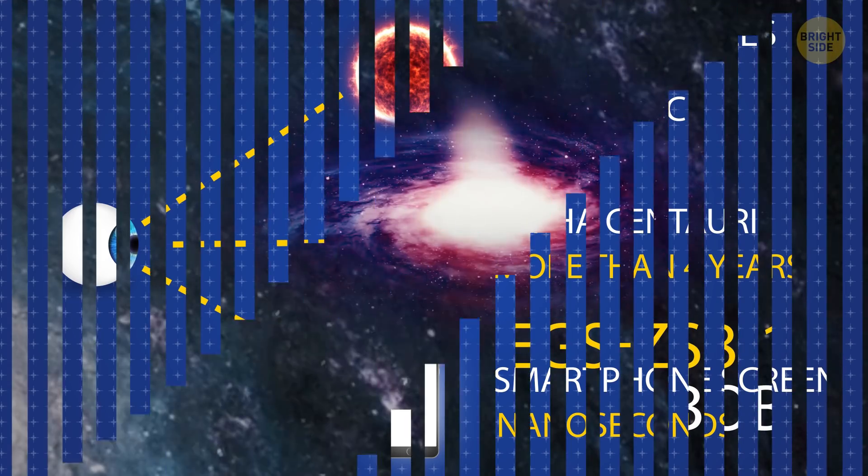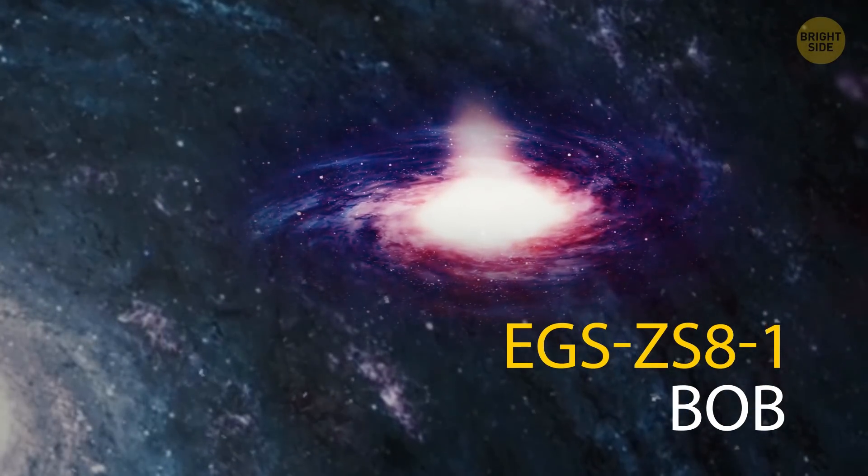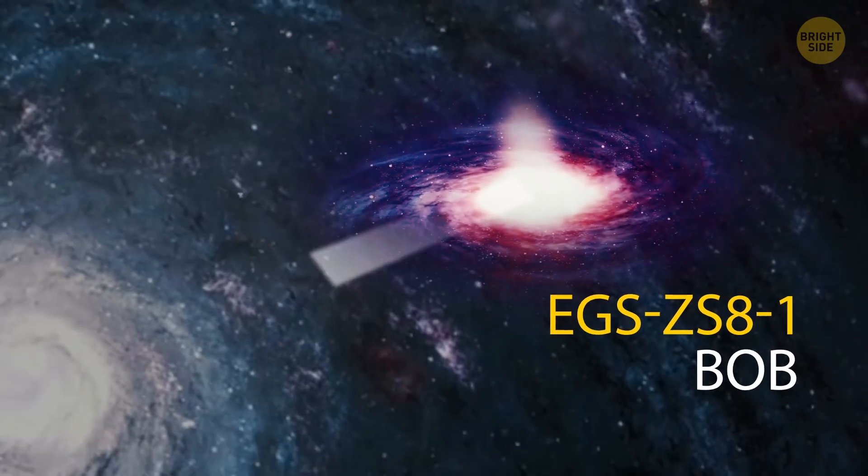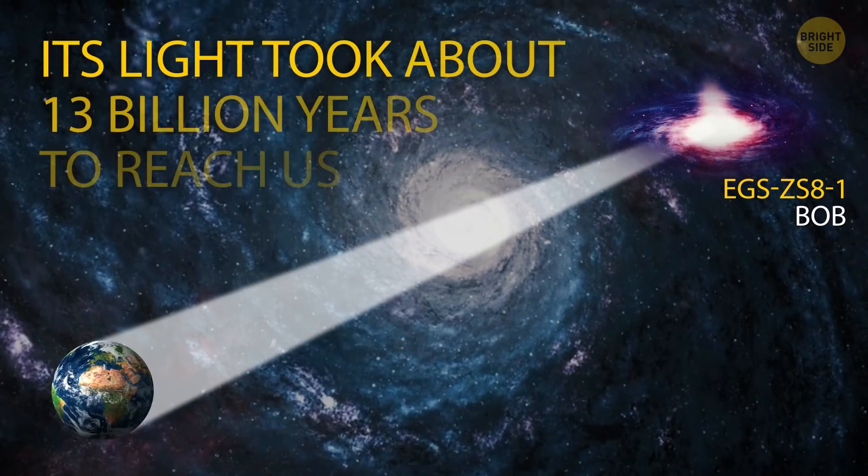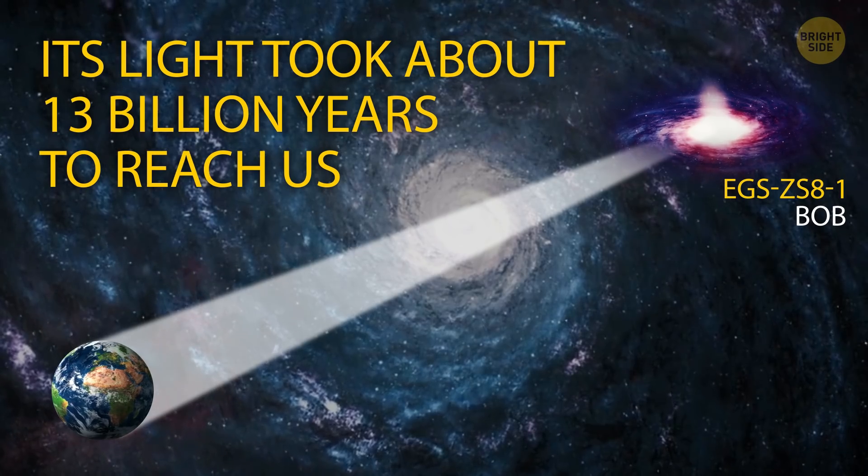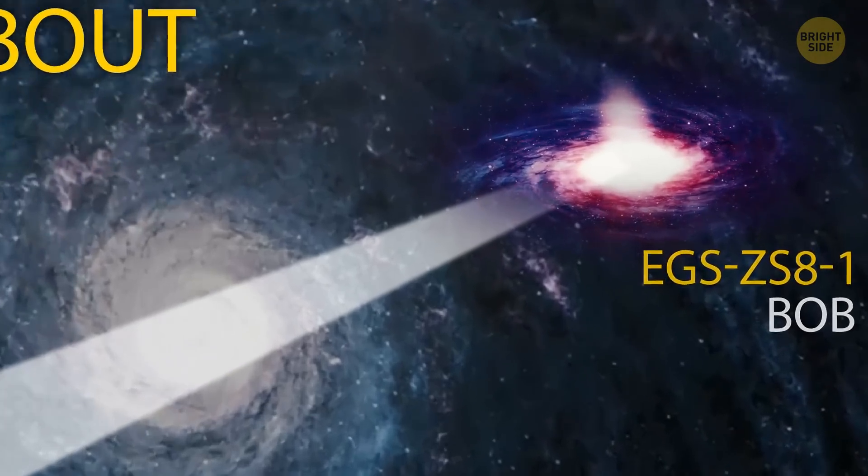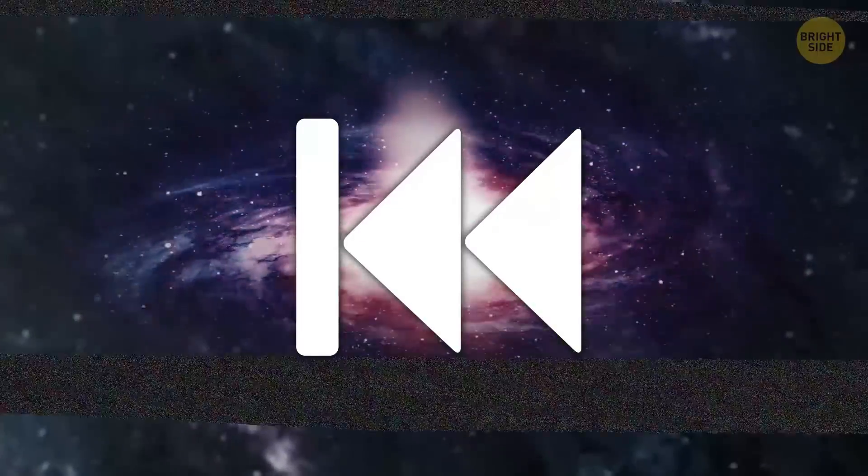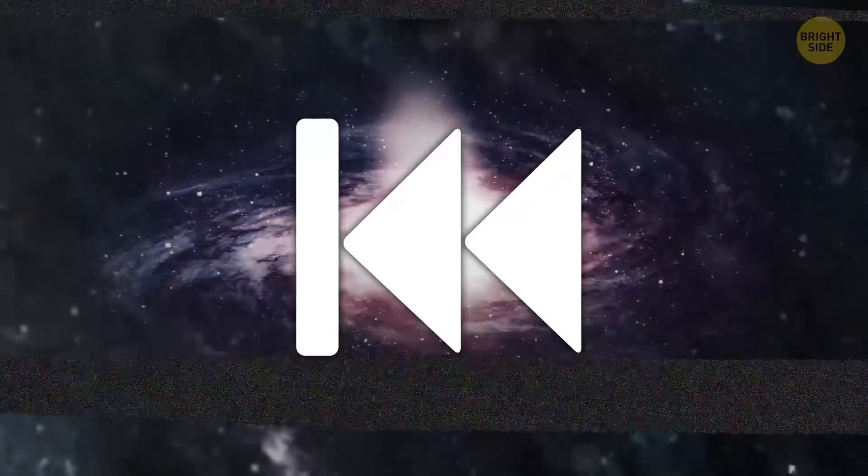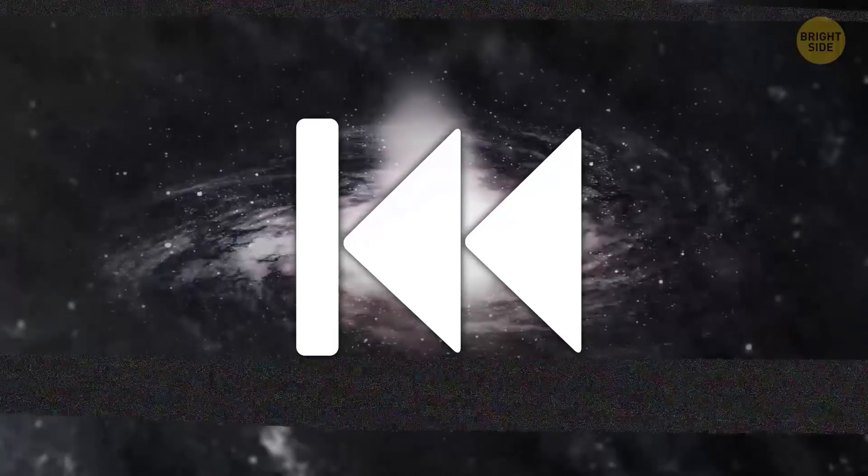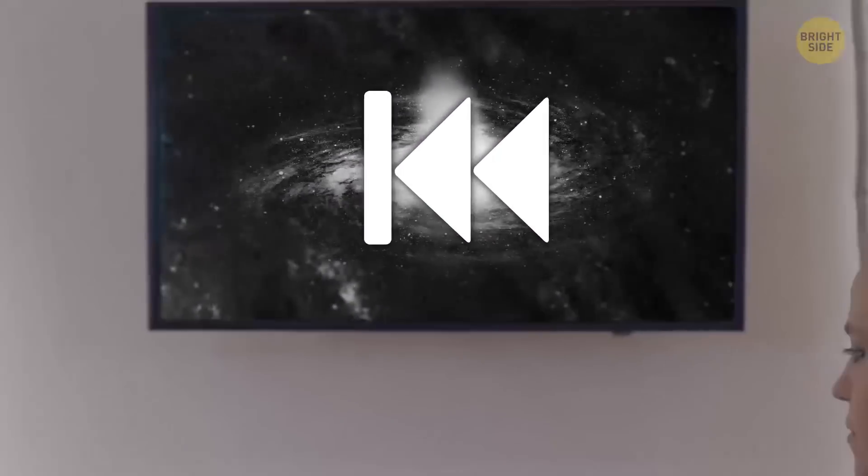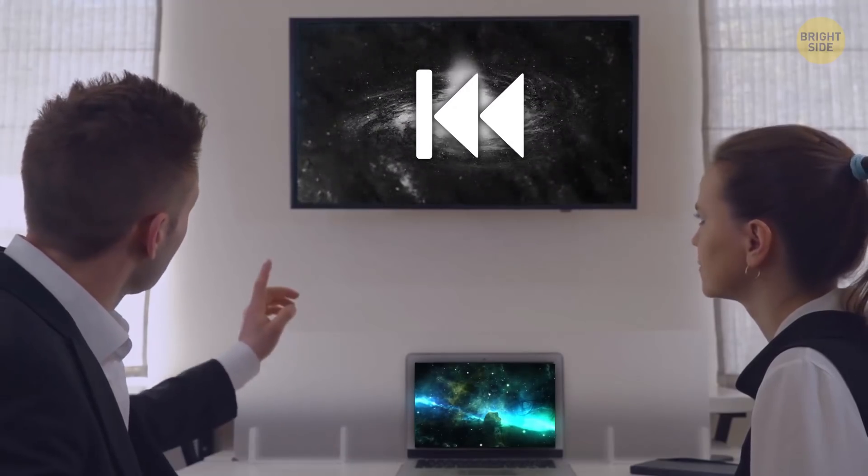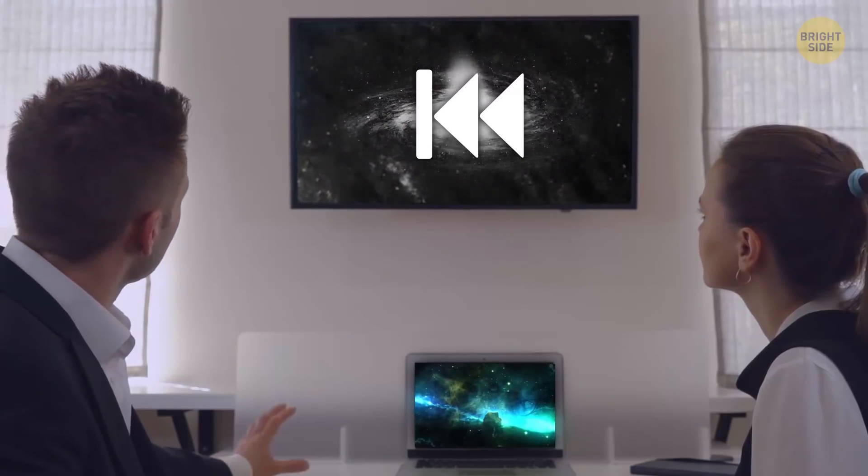So now let's go back to the farthest known galaxy, the EGS ZX-8-1, or Bob. Since its light took about 13 billion years to reach us, it means that what we see of this galaxy today is how the galaxy looked about 13 billion years ago, long before the Earth or even our Sun came into existence. The discovery of such galaxies has helped astronomers to understand how the universe began and how it's evolved since then.